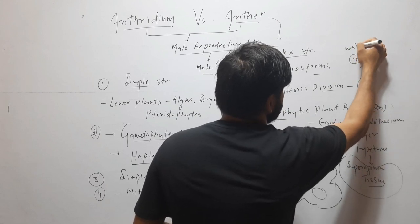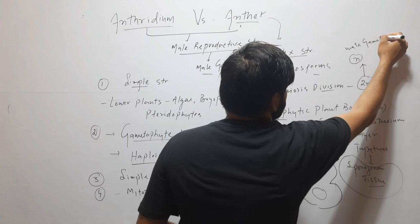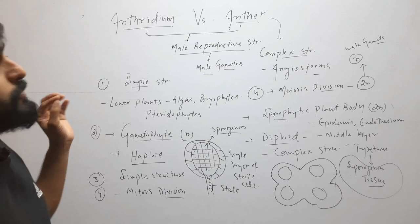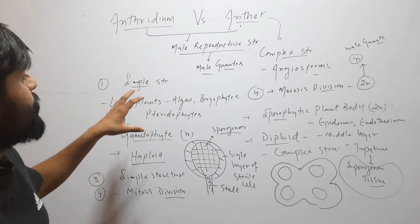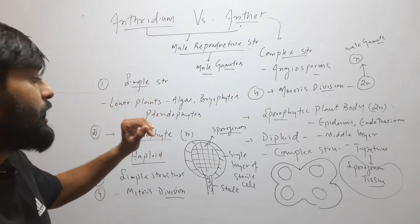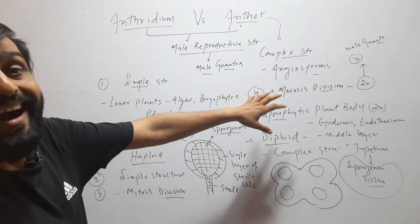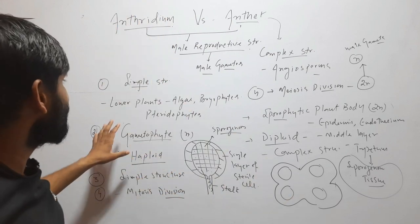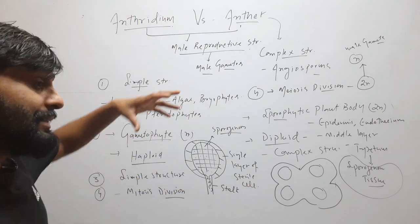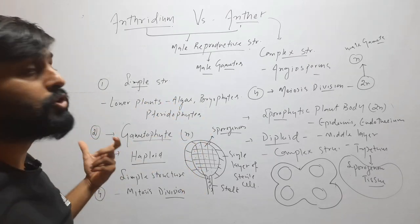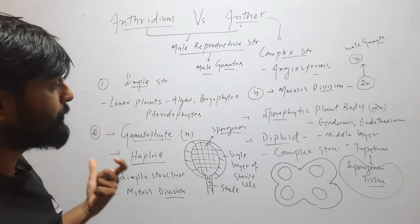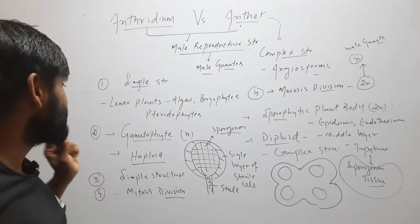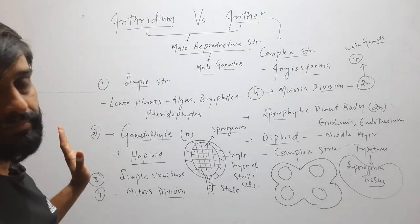So to summarize the difference between antheridium and anther: both are male reproductive structures that produce male gametes. Antheridium is a simple structure found in lower plants — algae, bryophytes, and pteridophytes — while the anther is found in higher plants, that is, angiosperms. Antheridium is borne on the gametophytic (haploid) plant body, while the anther is formed on the sporophytic plant body.